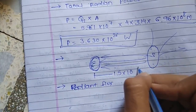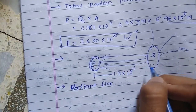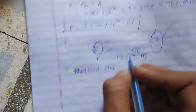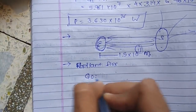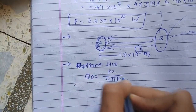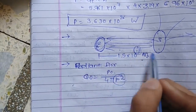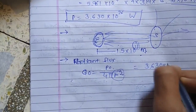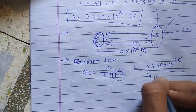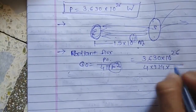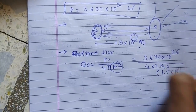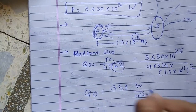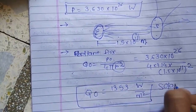The mean distance is 1.5 × 10⁸ km, which equals 1.5 × 10¹¹ meters. The heat flux at Earth's distance is q₀ = P₀ / (4πr²), where r is the distance between the Earth and the Sun. Substituting: 3.630 × 10²⁶ divided by 4 × 3.14 × (1.5 × 10¹¹)², the result is 1.353 Watts per meter square — which is the solar constant.